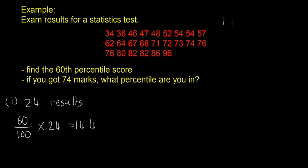And that'll basically give us 14.4. So that means if you laid all of these out in a line, 1, 2, 3, 4, all the way up to 24, that means we go to the 14.4th place, and that would be our 60th percentile score. So that's sort of what this number means.